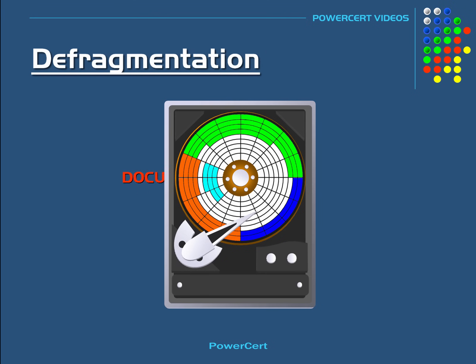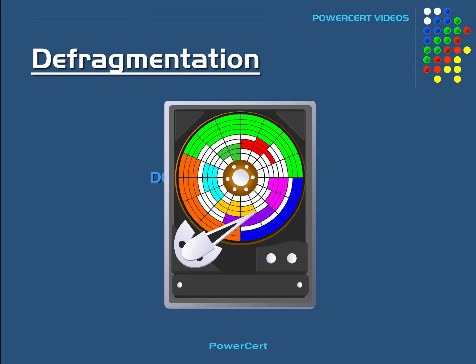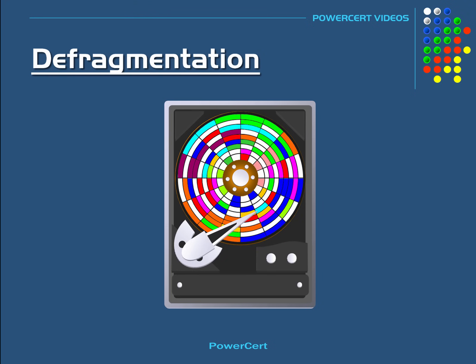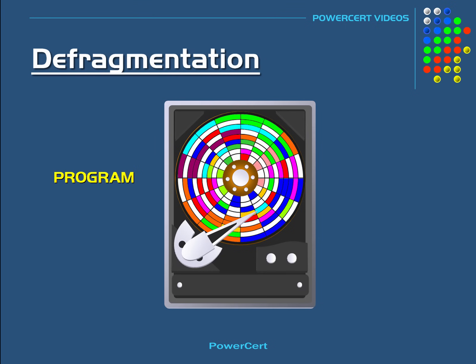Now over time, as data is added and deleted, the free space on the hard drive will get smaller and will tend to spread out in different locations on the hard drive instead of being in one general location. As you can see, the free space on this hard drive is spread out into different chunks. So if another program is installed, the computer may not be able to find enough free space in one location to accommodate the program because the free space is scattered in different locations.